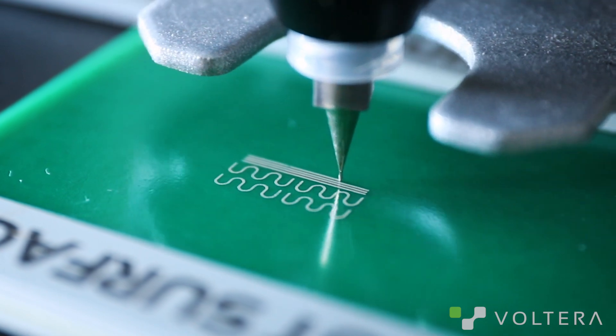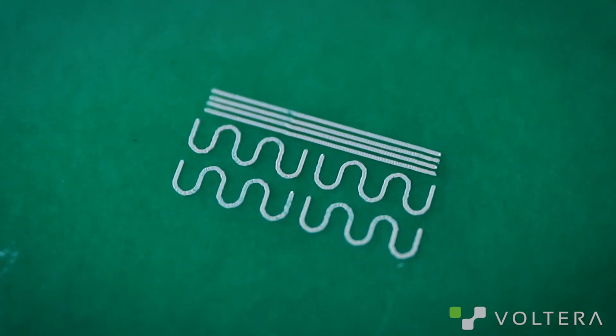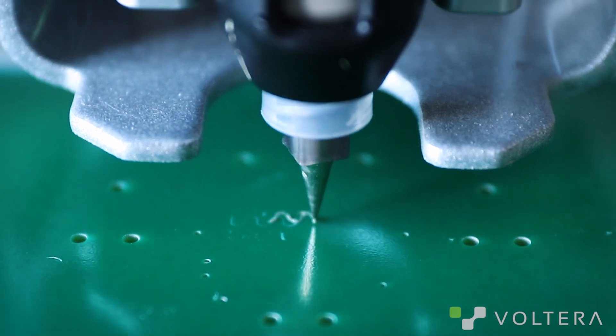If the nozzle is too close, it might smear the traces and make them too fat, or just straight up smash the substrate and snap the tip of the nozzle off.